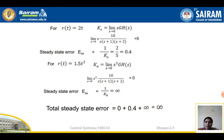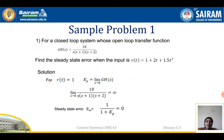For r(t) = 1.5t², Ka = limit s tends to 0 of s²·G(s). Substituting gives s²·10 divided by s·(s+1)·(s+2). Only one s term cancels in numerator and denominator, leaving one s in the numerator. As s tends to 0, Ka = 0. Hence e(s) = 1/Ka = infinite. The total steady state error is 0 + 0.4 + ∞ = infinite.